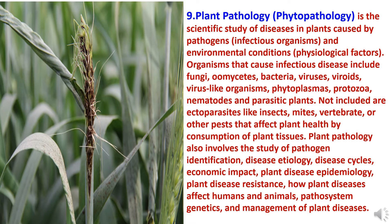The ninth branch of agriculture is plant pathology, also known as phytopathology. This is the scientific study of diseases in plants caused by pathogens — infectious organisms and environmental conditions. Organisms that cause infectious diseases include fungi, oomycetes, bacteria, viruses, viroids, virus-like organisms, phytoplasmas, protozoa, nematodes and parasitic plants.